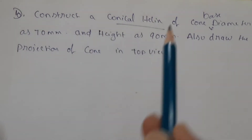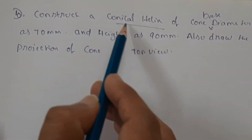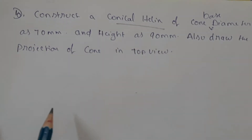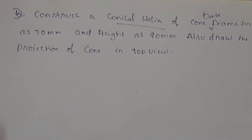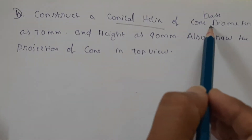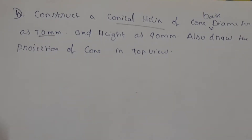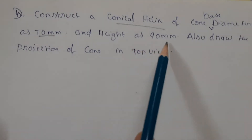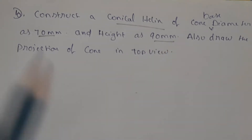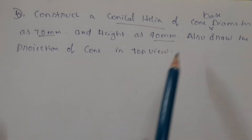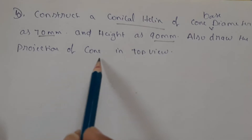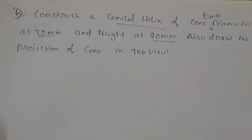Construct a conical helix. Conical helix is drawn for a cone, and cylindrical helix is drawn for a cylinder. The problem asks us to draw a conical helix of cone base diameter 70 mm and height 90 mm, and also draw the projection of the cone in top view — how it looks like in top view.